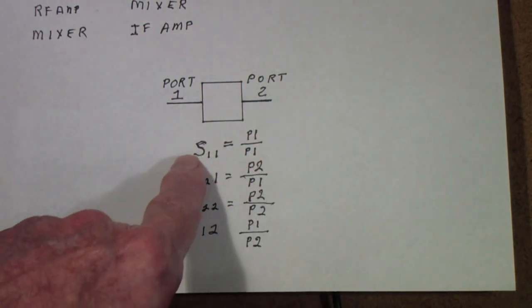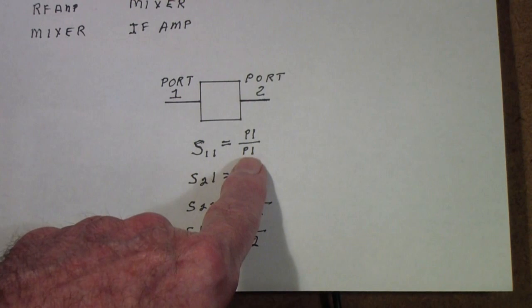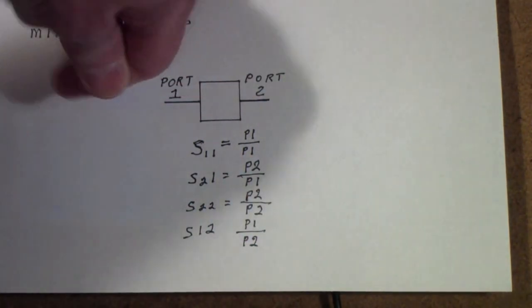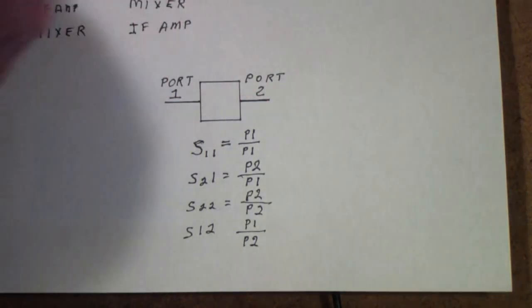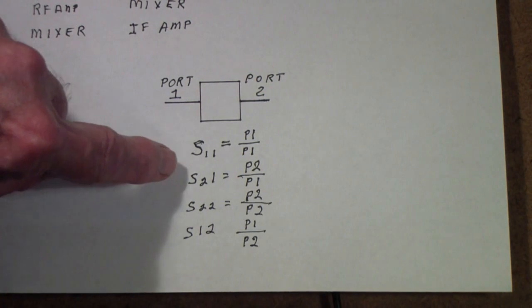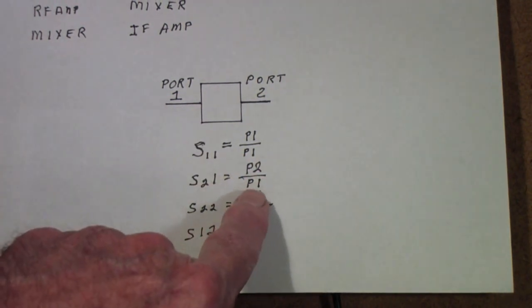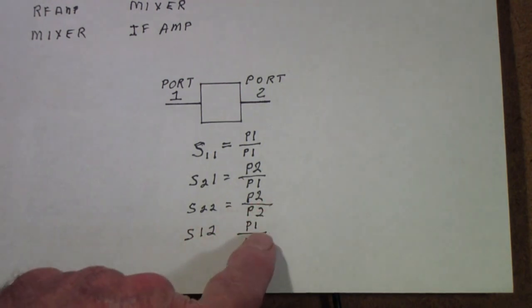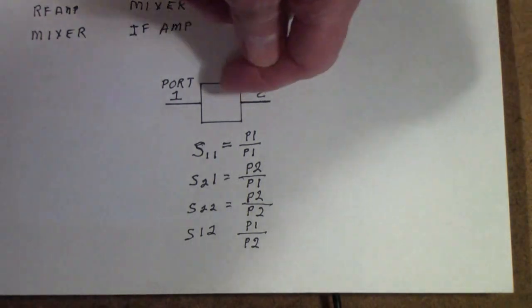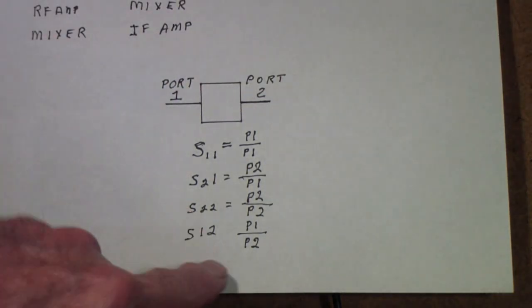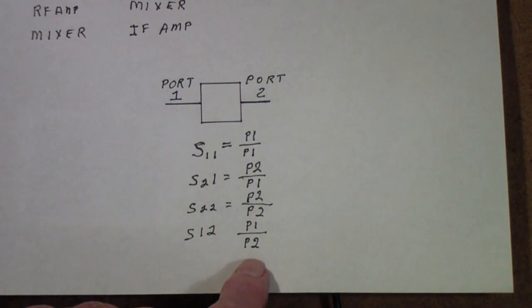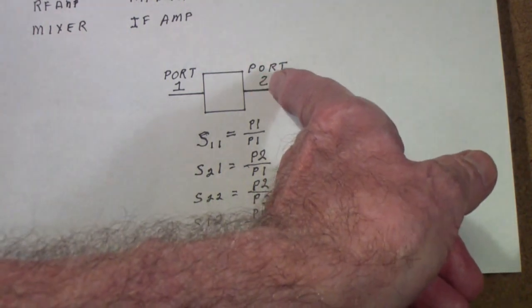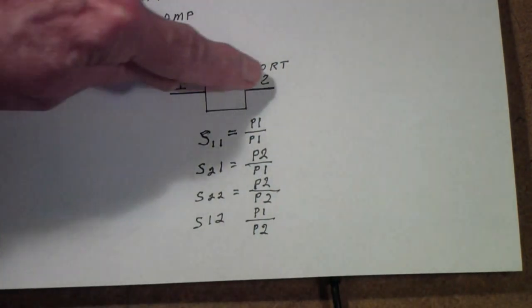And all that S scattering parameters do is the subscripts just refer to the ratio of the thing you're measuring. S11, you're measuring port one to port one. In other words, it goes in and it comes right back out. You want to measure what went in, you want to measure what came back. S21 is port two relative to port one. S22 is port two relative to port two. Once again, goes in here, comes back out the same port. S12 is port one relative to port two. In other words, that's where a signal is being fed backwards. You're feeding it into port two and you want to measure port one relative to port two.